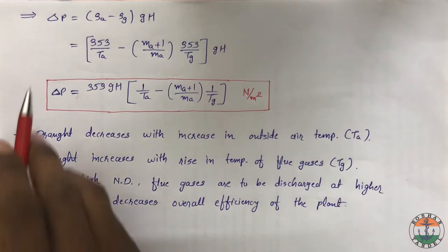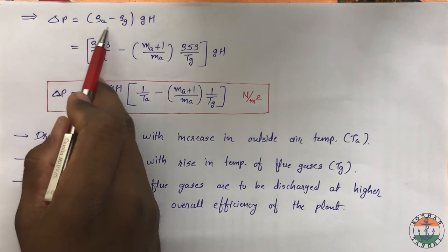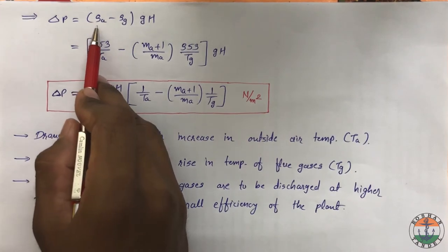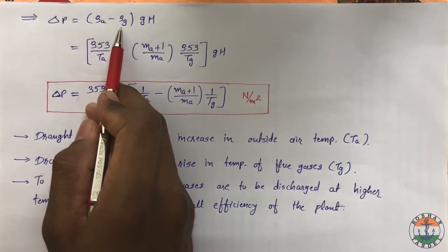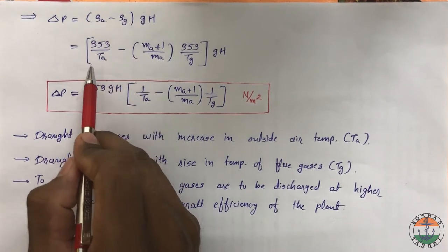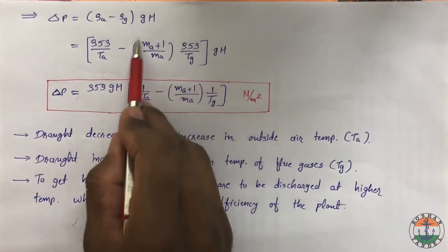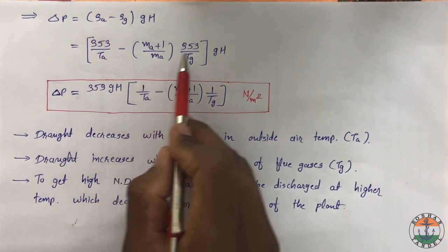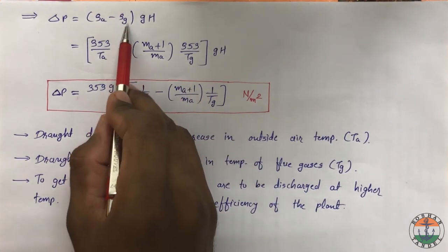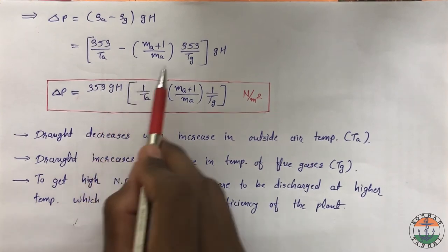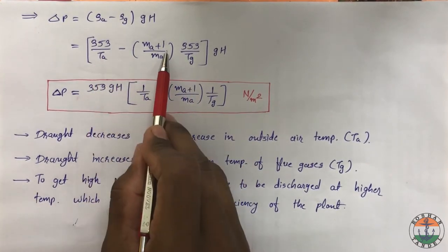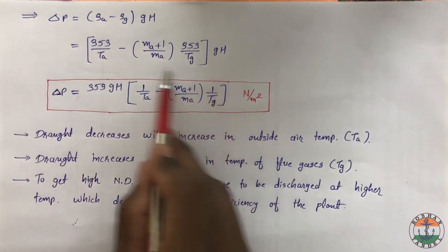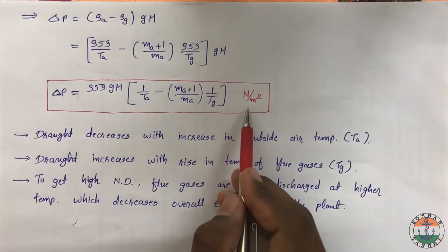Initially we have delta P = (rho_A − rho_G) × G·H. Substituting rho_A = 353/TA and rho_G = (Ma+1)/Ma × 353/Tg, and taking 353 common from both terms, we get the final form of delta P in Newton per meter square as: delta P = 353·G·H × [1/TA − (Ma+1)/Ma × 1/Tg].